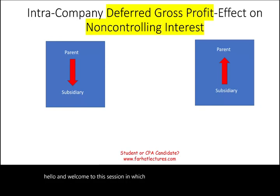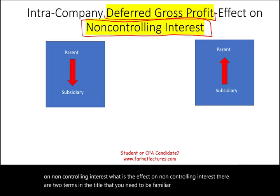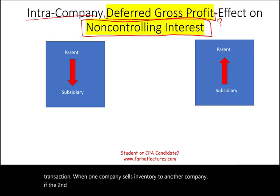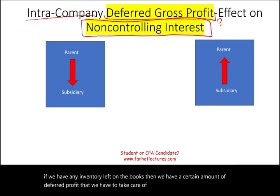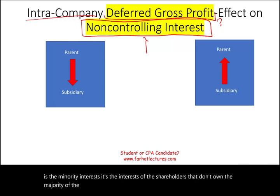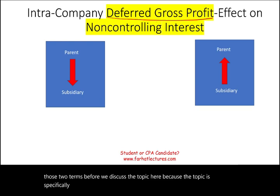Welcome to this session where we look at how to handle intercompany deferred gross profit and its effect on non-controlling interest. The deferred gross profit arises from intercompany transactions — when one company sells inventory to another. If the second company still has unsold inventory on its books, we have a certain amount of deferred profit to handle. Make sure you are comfortable with these two terms before we discuss the topic.